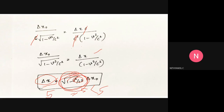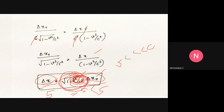In this equation, sqrt(1 - v²/c²) is only significantly different from 1 when the velocity is close to the speed of light. In everyday life, objects move at very small velocities compared to c, so we can neglect the difference and delta x approximately equals delta_x0. Length contraction is only observable at velocities approaching the speed of light.